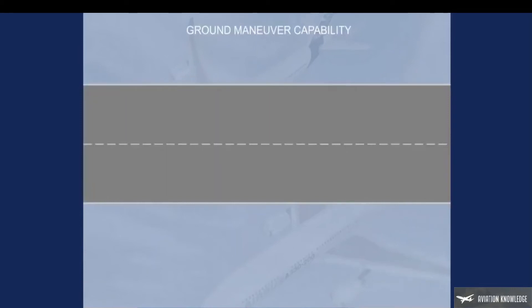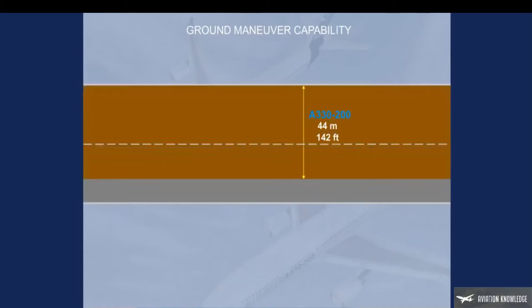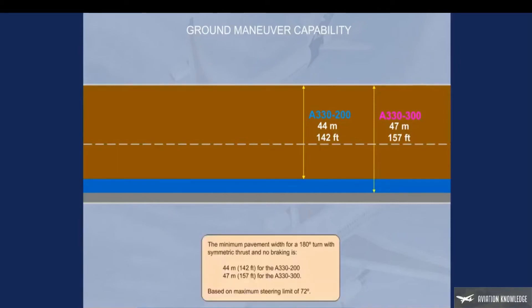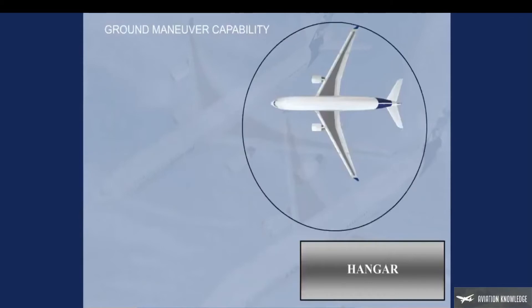The minimum pavement width for a 180-degree turn with symmetric thrust and no braking is 44 m (152 ft) for the A330-200, based on a maximum steering limit of 72 degrees. For the A330-200 and 300, if the wing clears the obstacle, the tail will also clear it.